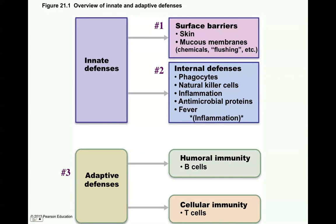I'll be talking about inflammation in a little bit more detail later on. The third line of defense would be the adaptive defense system that the body is able to develop. It consists primarily of humoral immunity by B cells or B lymphocytes, and then cellular immunity carried out by T cells or T lymphocytes.